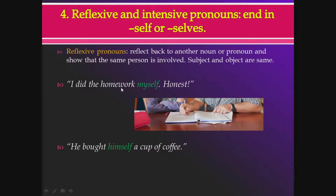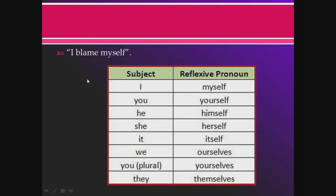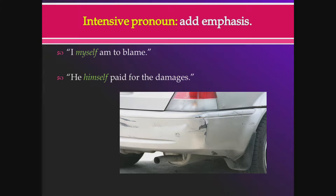For example: 'I did the homework myself' — 'I' and 'myself' both refer to the same person, making 'myself' a reflexive pronoun. 'He bought himself a cup of coffee' — he didn't buy for somebody else, he bought for himself. 'I blame myself' is another example. The reflexive pronouns corresponding to subjects are: myself, yourself, himself, herself, itself, ourselves, yourselves, themselves.